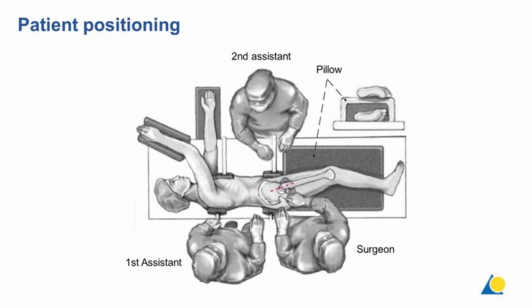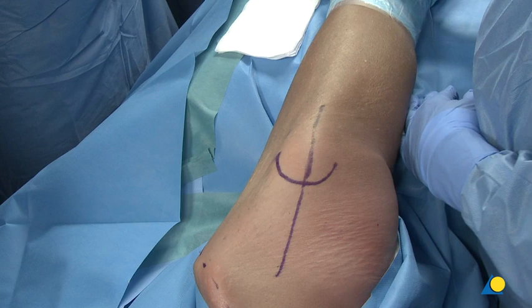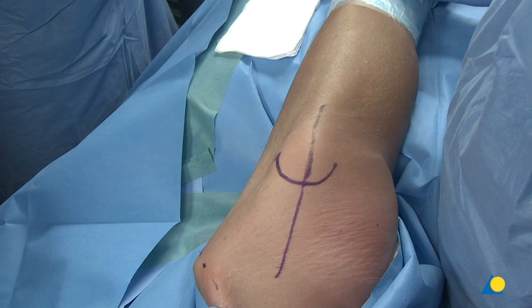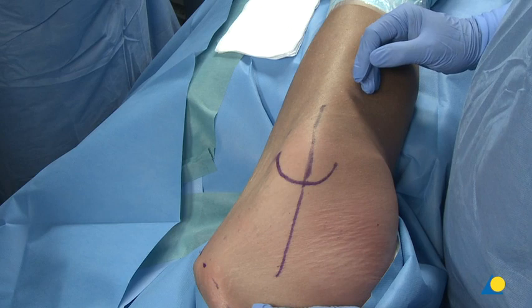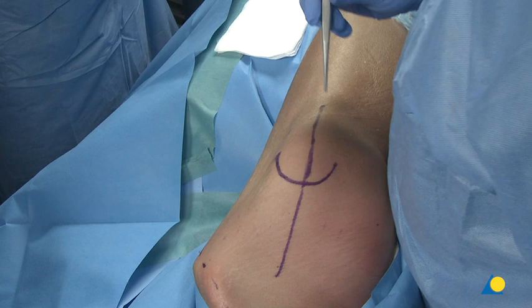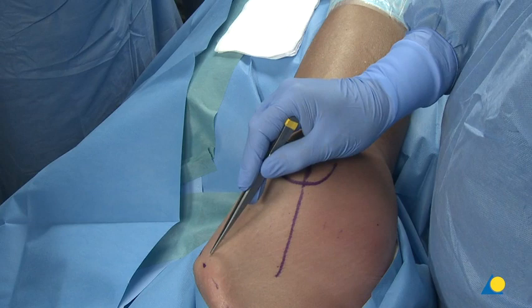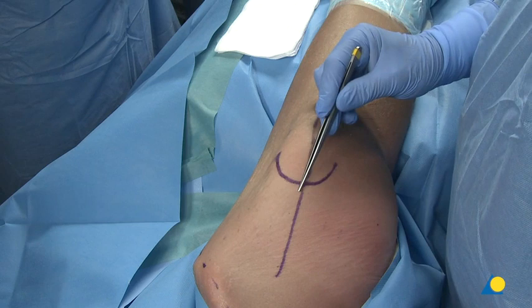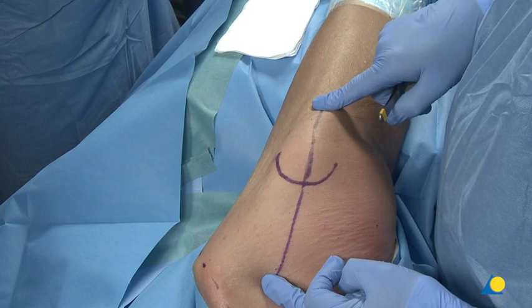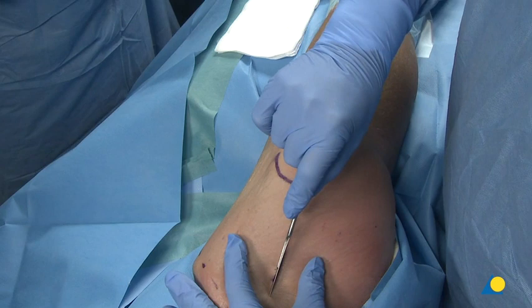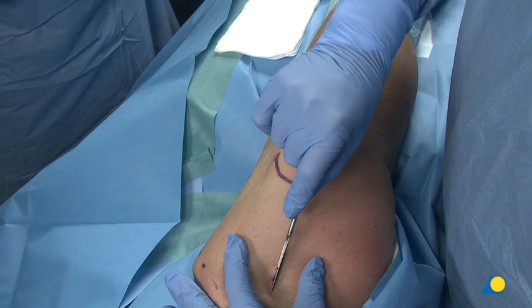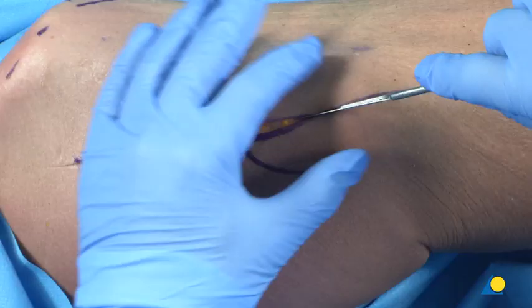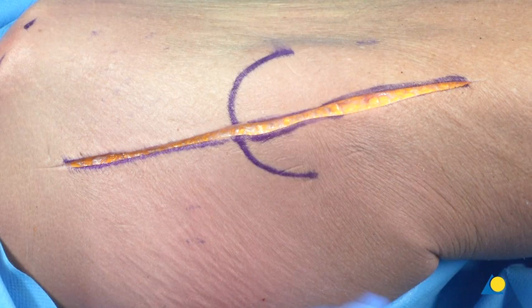In the operating theatre, the patient is in the left lateral decubitus position, head to the left and leg to the right. Landmarks drawn include the anterior superior iliac spine, the iliac crest, and the greater trochanter. The incision goes through the center of the greater trochanter — approximately 20 centimeters in length. We start incising through skin down to the subcutaneous fat tissue and fascia — the tensor fascia lata.